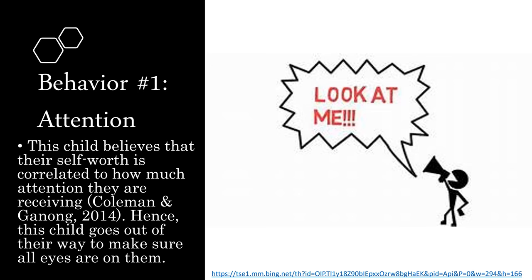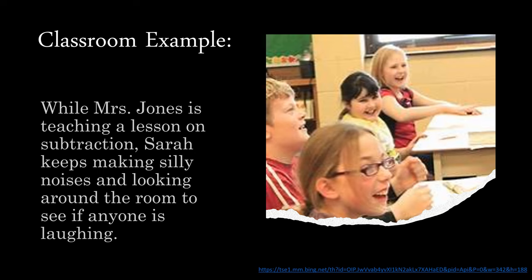The first behavior is attention, or a child who is an attention seeker. This child believes that their self-worth is correlated with how much attention they are receiving, and goes out of their way to make sure all eyes are on them. For the classroom application, Mrs. Jones is teaching a lesson on subtraction, and Sarah keeps making silly noises and looking around the room to see if anyone is laughing. Sarah is trying to gain the attention from her classmates away from her teacher.